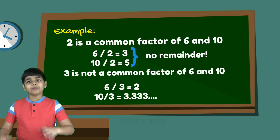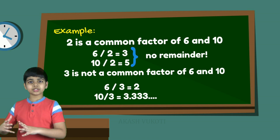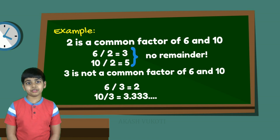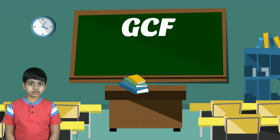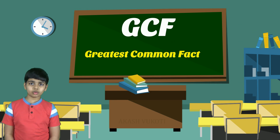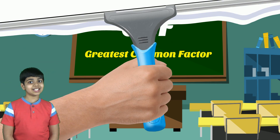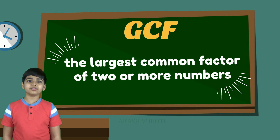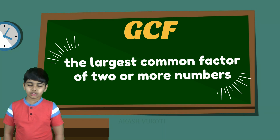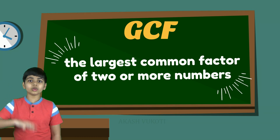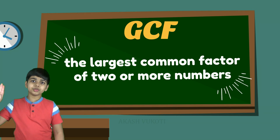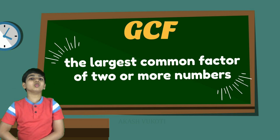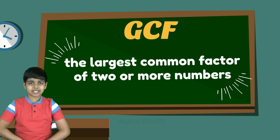Now, most numbers have more than one common factor. So, the greatest common factor or GCF is the largest common factor of two or more numbers. Now, let's begin with an example.